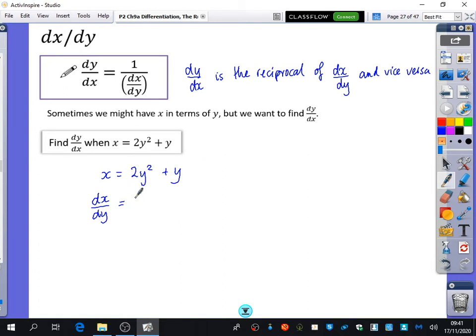2y squared differentiates to 4y, and y differentiates to one. Normally when you differentiate y with respect to x, you get dy/dx. But when you do it with respect to y, you just get one. So it's all about what, with respect, you're doing it to.